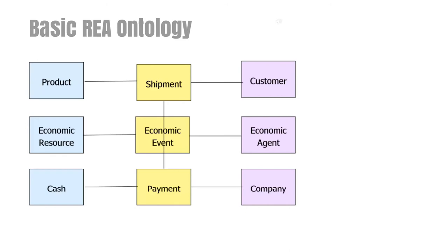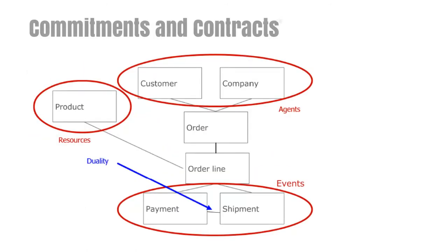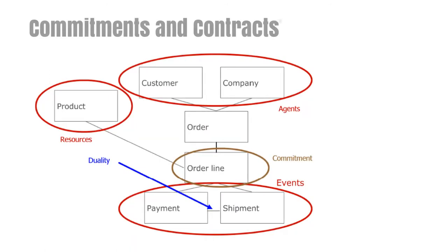So much for the basic concepts in REA. But returning to our original example, we will see that some parts have still not been classified. We have classified most of the components in the example, but not yet order and order line. An order line essentially says that the company has committed to deliver a product and the customer has committed to pay for that product. There is an obligation for the company to deliver and for the customer to pay as compensation. We can think about an order line as a pair of commitments, so we classify order line as a commitment.